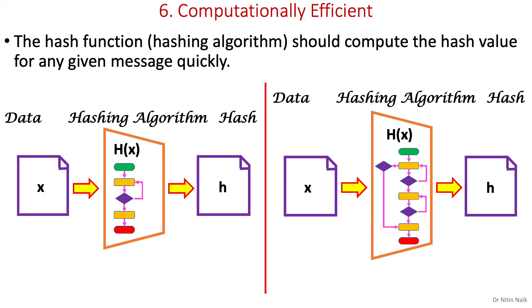The final property is computationally efficient. The hash function or hashing algorithm should compute the hash value for any given message quickly. However, this property is a little more subjective and generally there is a trade-off between performance and security, so it requires a good balance between these two. You can determine the computational efficiency depending on the requirement of a specific application area.